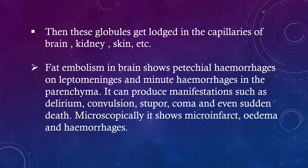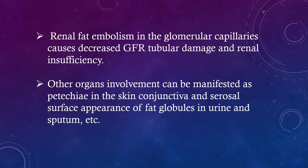Microscopically, brain involvement shows microinfarcts, edema, and hemorrhages. Renal fat embolism in the glomerular capillaries causes decreased GFR, tubular damage, and renal insufficiency. Other organ involvement can be manifested as petechiae in the skin, conjunctiva, and serosal surfaces, and appearance of fat globules in urine and sputum.